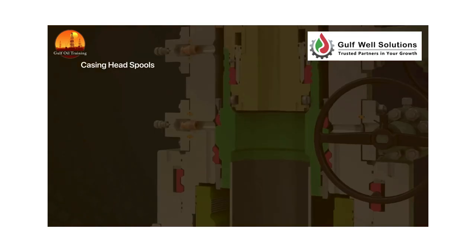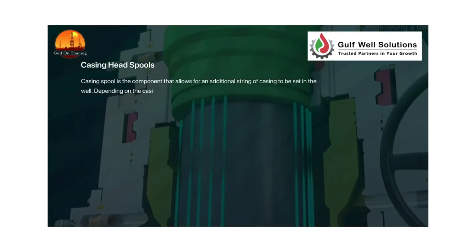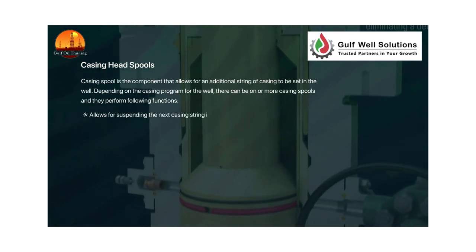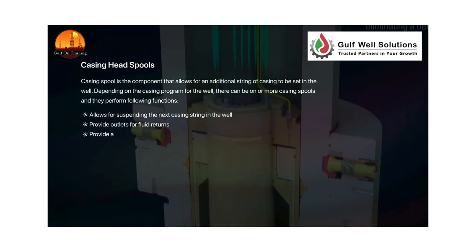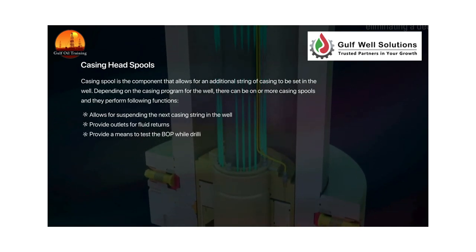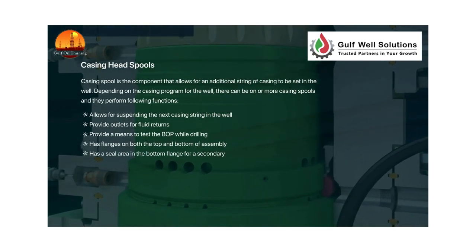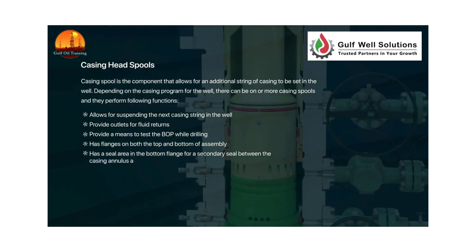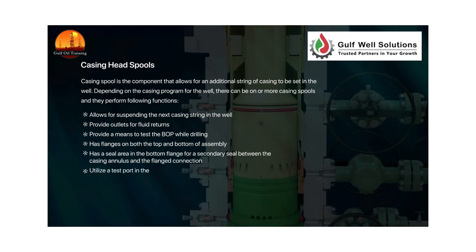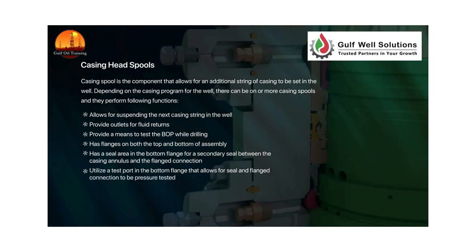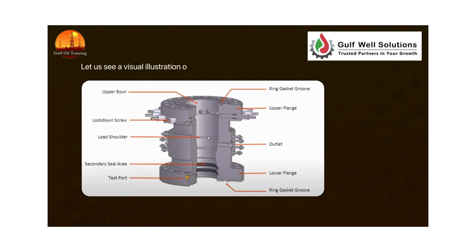A casing spool is the component that allows for an additional string of casing to be set in the well. Depending on the casing program, there can be one or more casing spools. They perform the following functions: allow for suspending the next casing string in the well, provide outlets for fluid returns, provide a means to test the BOP while drilling. The spool has flanges on both the top and bottom of the assembly, a seal area in the bottom flange for a secondary seal between the casing annulus and the flanged connection, and a test port in the bottom flange that allows for seal and flanged connection pressure testing.